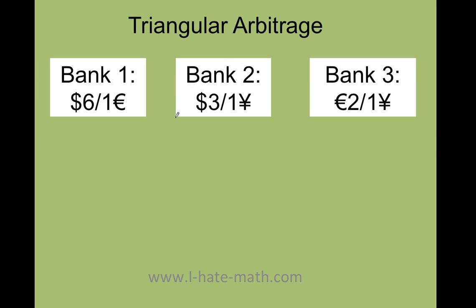Let's say that you are here in the United States reading the newspaper and you see the rate of bank one and bank two. You have the dollar over the euro and the dollar over the yen. Bank three is in another country, and you want to figure out if by using a triangular arbitrage you can go ahead and make some money. Remember you have $600.